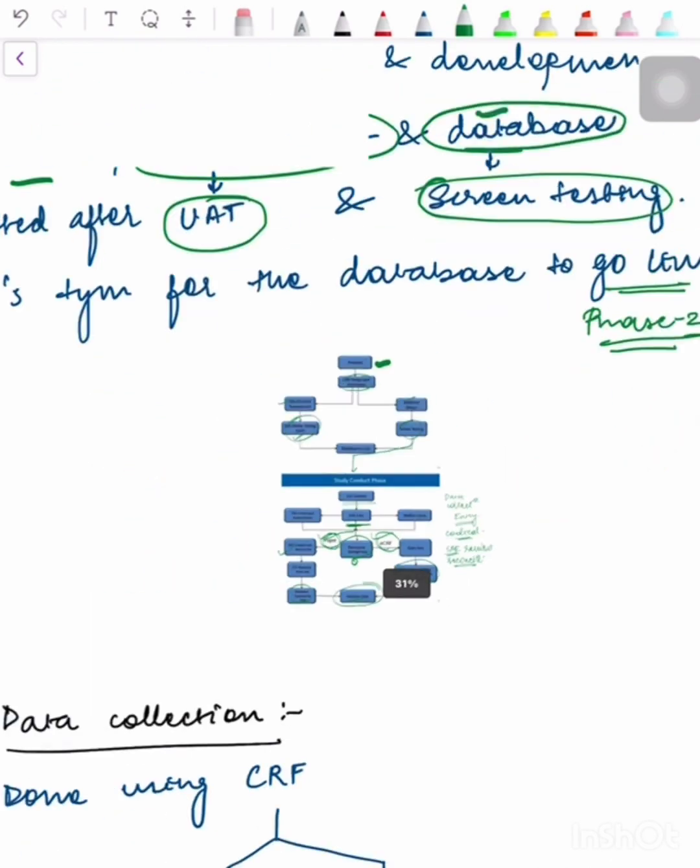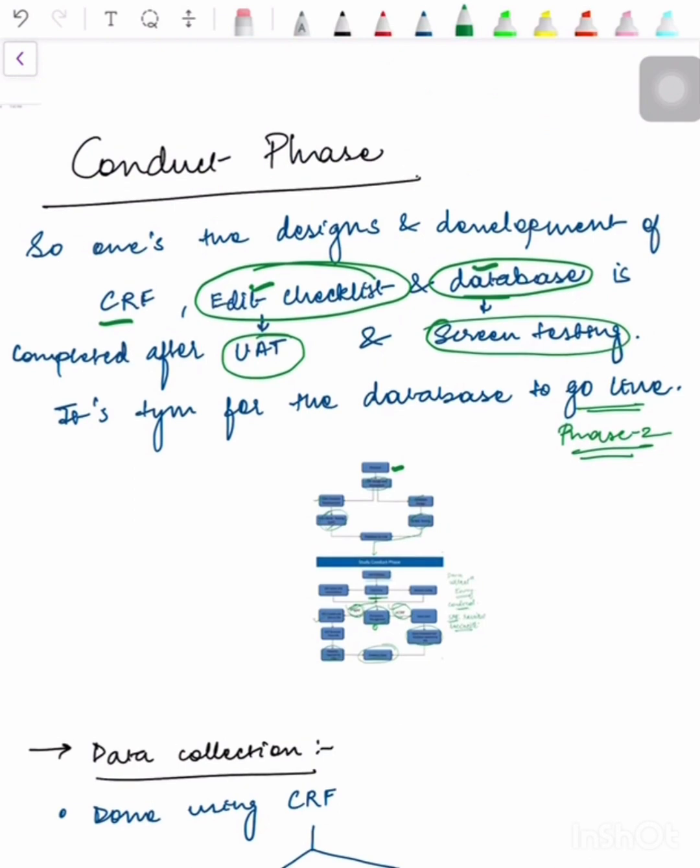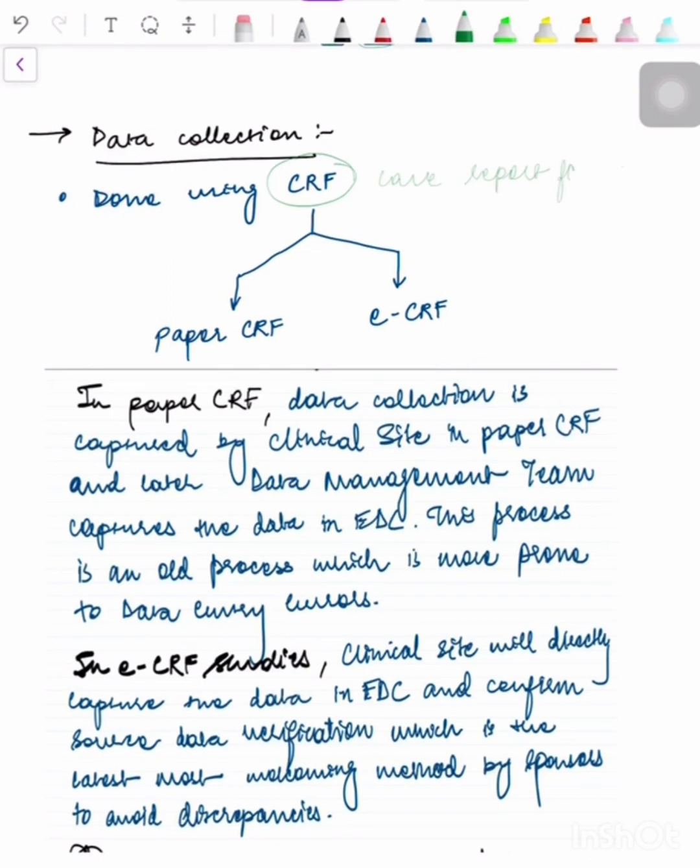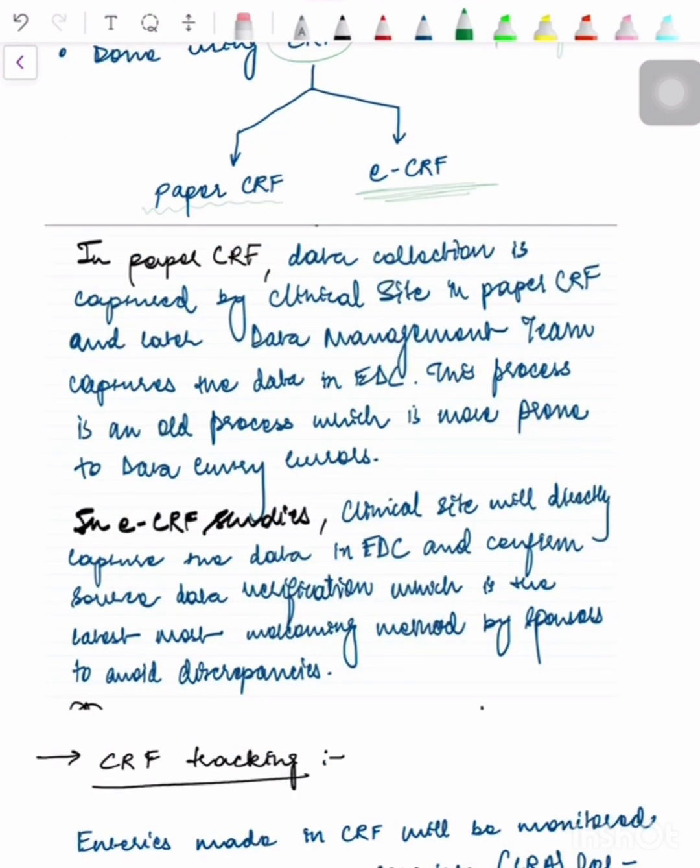The first step in the Conduct Phase is data collection. Data collection is done using CRF - the form which is done by two mediums. First is Paper CRF and second is eCRF (Electronic CRF). In Paper CRF, data collection is captured by the clinical site in paper format, and later the data management team captures the data and converts it into EDC.